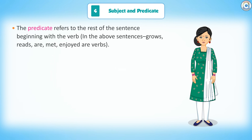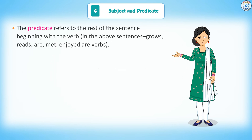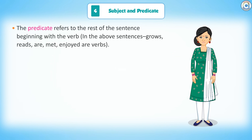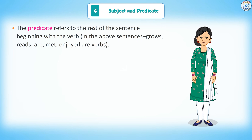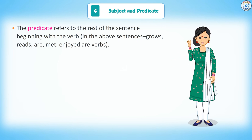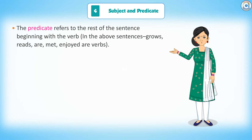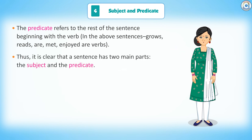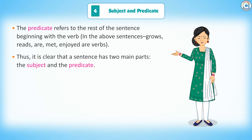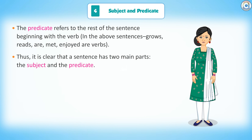The predicate refers to the rest of the sentence beginning with the verb. In the above sentences, grows, reads, are, met, enjoyed are verbs. Thus, it is clear that a sentence has two main parts: the subject and the predicate.